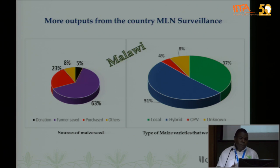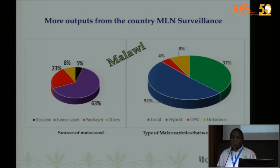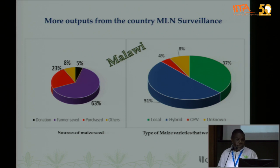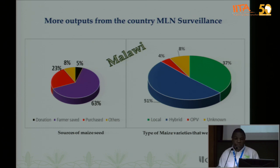As an example, you can capture the sources of seed that farmers planted. For Malawi, the data shows clearly that 23% of seed was purchased, 8% is from other sources, and the bulk — around 63% — is from farmers' own seed. This information can also be captured during surveillance and analyzed in the MLN Toolbox to generate clear pie charts.